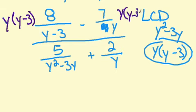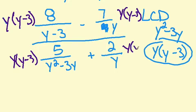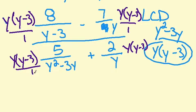So y minus 3, y minus 3, and y times y minus 3. And all these lowest common denominators are all on the top, so they're all over 1 if that's more clear for you.